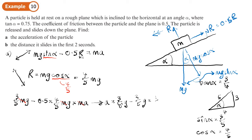The acceleration is (1/5)g, which we can leave as an exact answer, or calculating: (1/5) × 9.8 = 1.96 m/s². There's the acceleration, which we can now use in part (b) with SUVAT.